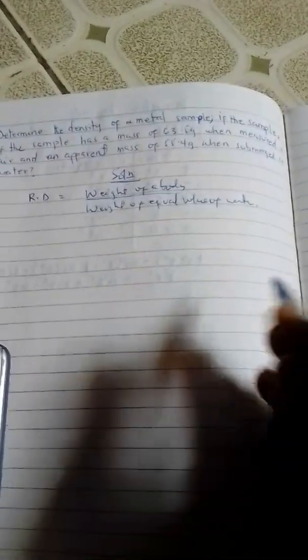If we have the weight of a body over the weight of equal volume of water, that gives us the relative density of the material. We are given the mass of the sample in air, which gives us its weight.